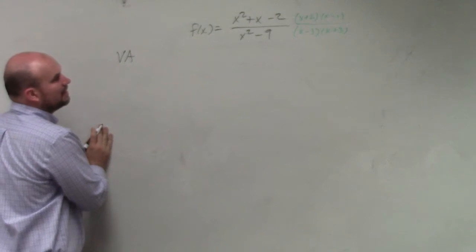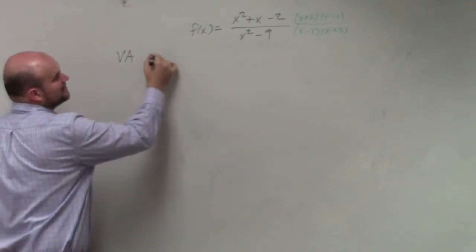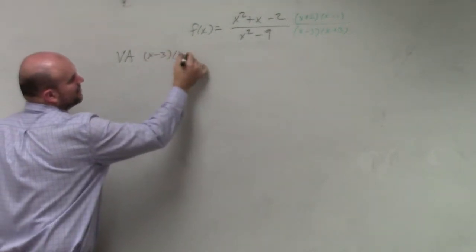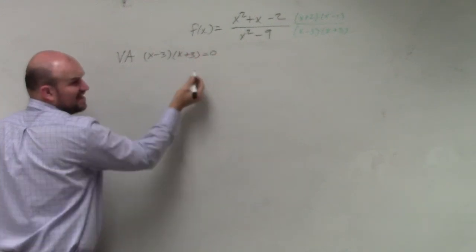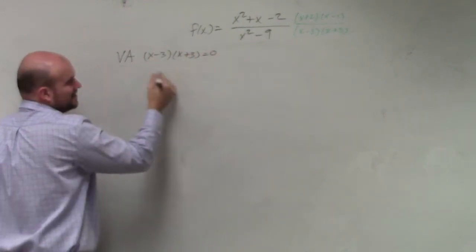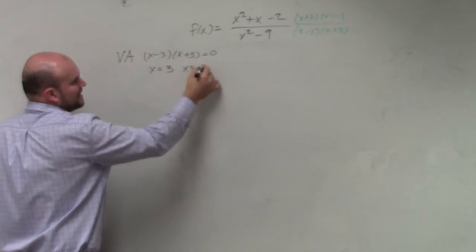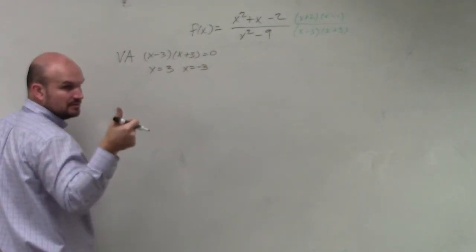So vertical asymptote is just going to be setting the denominator equal to 0. Well, since I already factored it, let's just use that form. Set them equal to 0. Hopefully you guys follow me that x equals positive 3 and x equals negative 3. Cool?